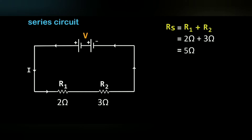Let us calculate one problem. R1 is having 2 Ohms and R2 is having 3 Ohms. Since it is in series combination, the formula is Rs is equal to R1 plus R2. Putting the values of R1 and R2 in this equation, we get the total resistance equal to 5 Ohms.